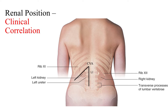Notice that the left kidney sits slightly higher than the right kidney. The reason for this is due to the size of the liver, which also sits on the right side, creating a need for more space so the right kidney moves down slightly.